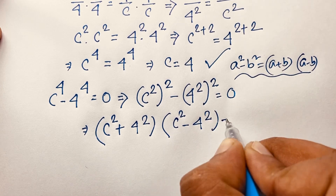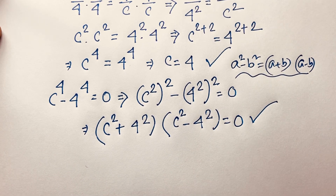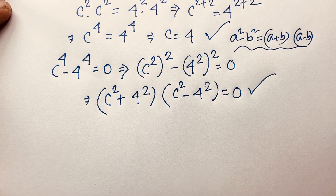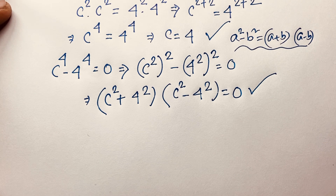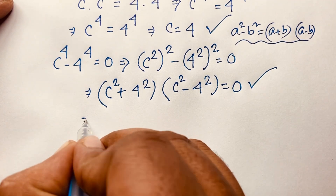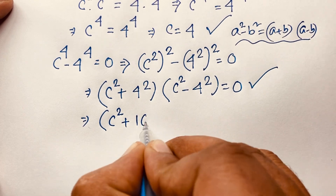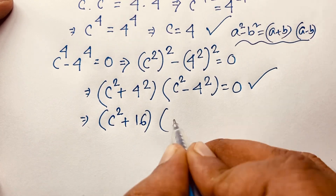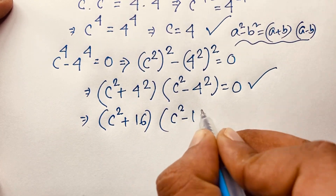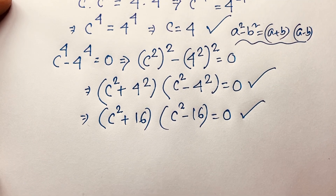Following this identity, the expression becomes (c squared plus 4 squared) times (c squared minus 4 squared) equals 0. We now have two cases: case one is c squared plus 4 squared equals 0, and case two is c squared minus 4 squared equals 0. Expanding, that is c squared plus 16, and c squared minus 16.